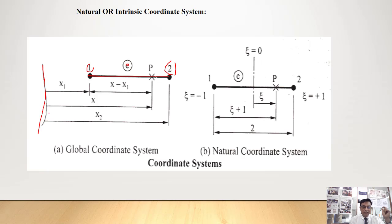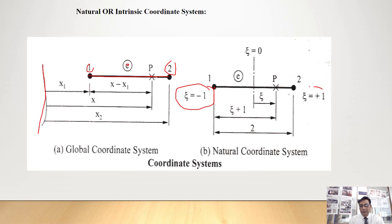From this datum reference line, the distance from node 1 is x1 and the distance for node 2 is x2. Any point P between nodes 1 and 2 is at a distance x. In the natural coordinate system, the center of the element is at zeta = 0, node 1 is at zeta = -1 and node 2 is at zeta = +1, so the element has a length of 2 units.